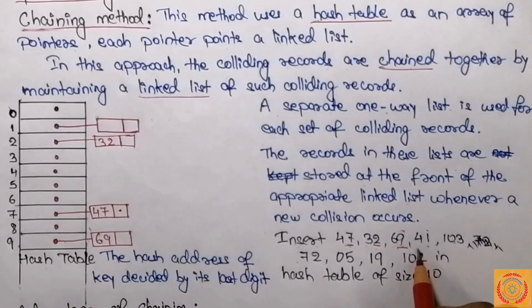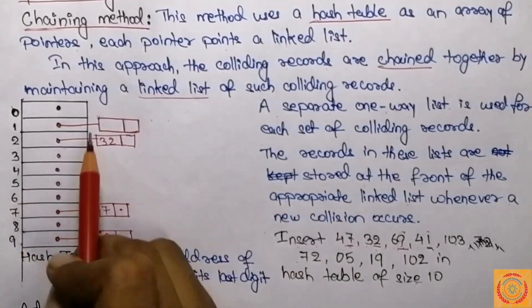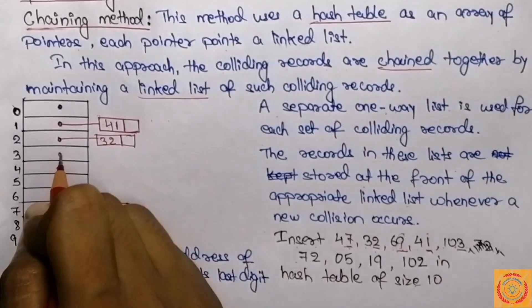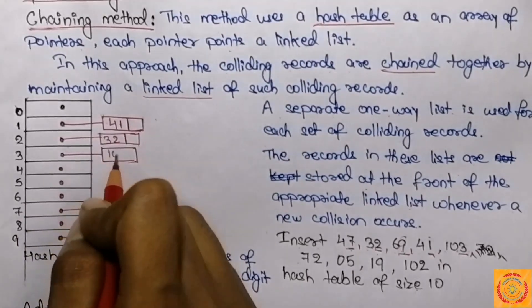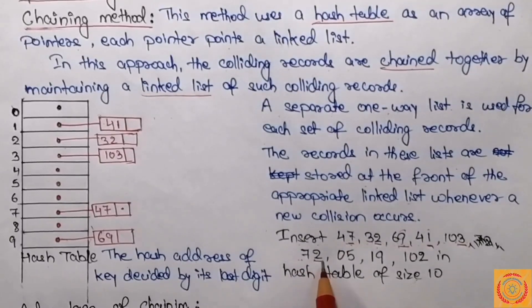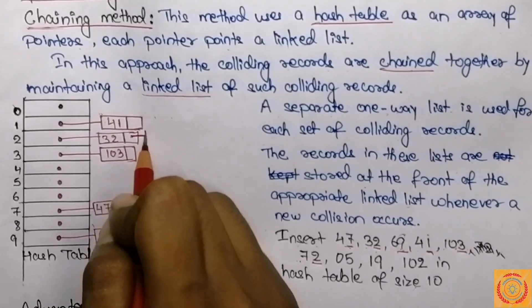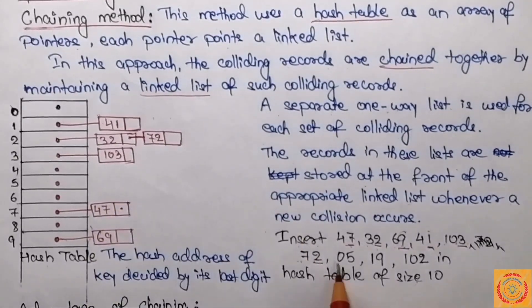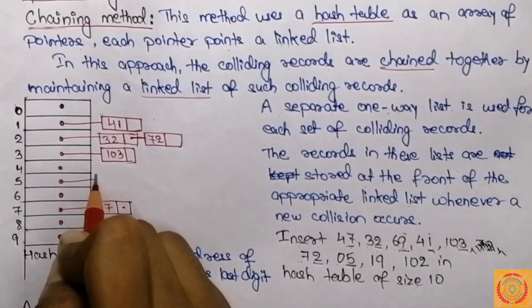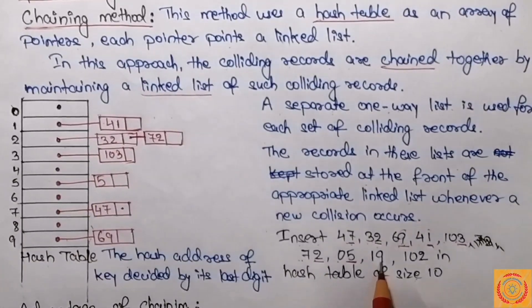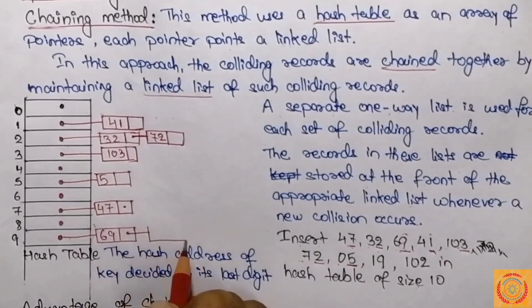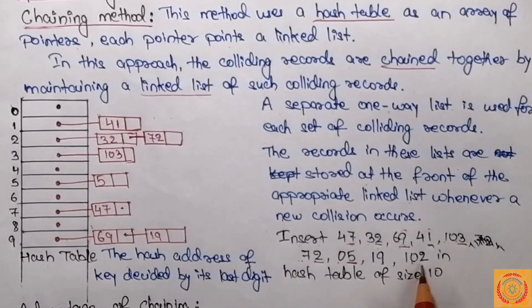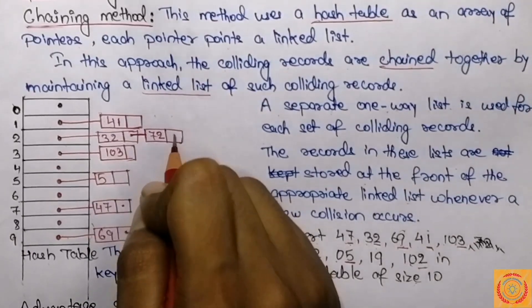Next, data 41 has last digit 1, so we go to index 1 and store 41 in the linked list. Then 103 — last digit 3 — stored at index 3. Then 72 — last digit 2 — so we extend the link part at index 2 and store 72 there, chained after 32. Then 5 goes to index 5. Then 19 — last digit 9 — so we extend the link part at index 9 and store 19, chained after 69. Finally, 102 — last digit 2 — we go to index 2.